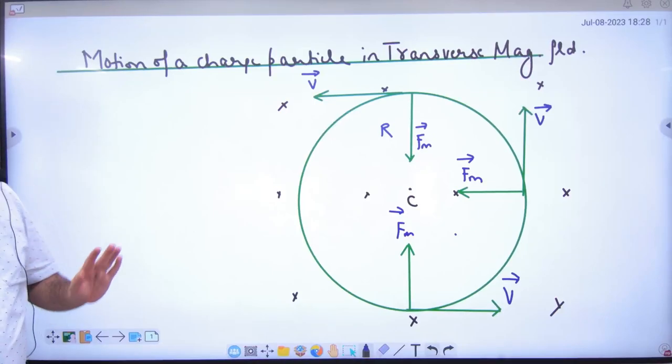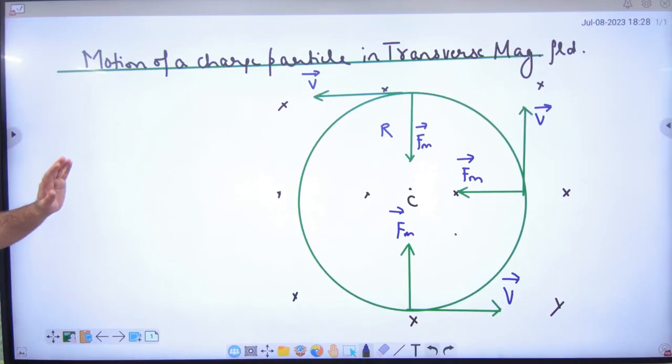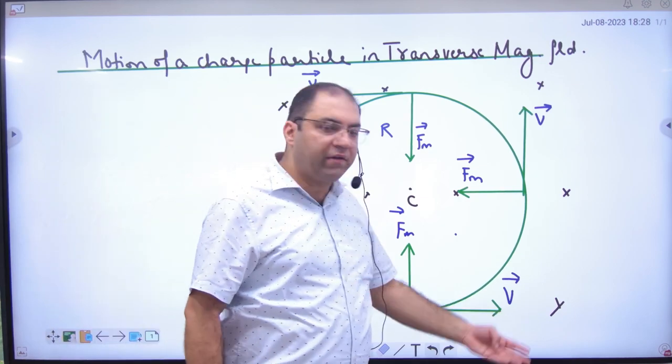So point number one, motion of a charged particle in transverse magnetic field. If the magnetic field is perpendicular and the particle moves like this, velocity of V.